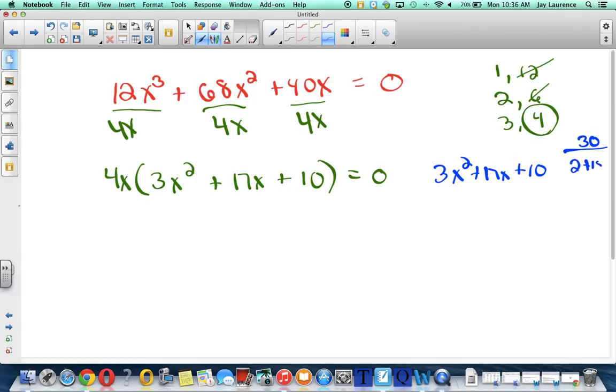Now I need two factors of 30 that add to get 17. Well, how about 2 and 15? Yeah, if I see it right away, I don't have to list them all out. So I'm going to rewrite 3x squared plus a 15x plus a 2x plus 10.